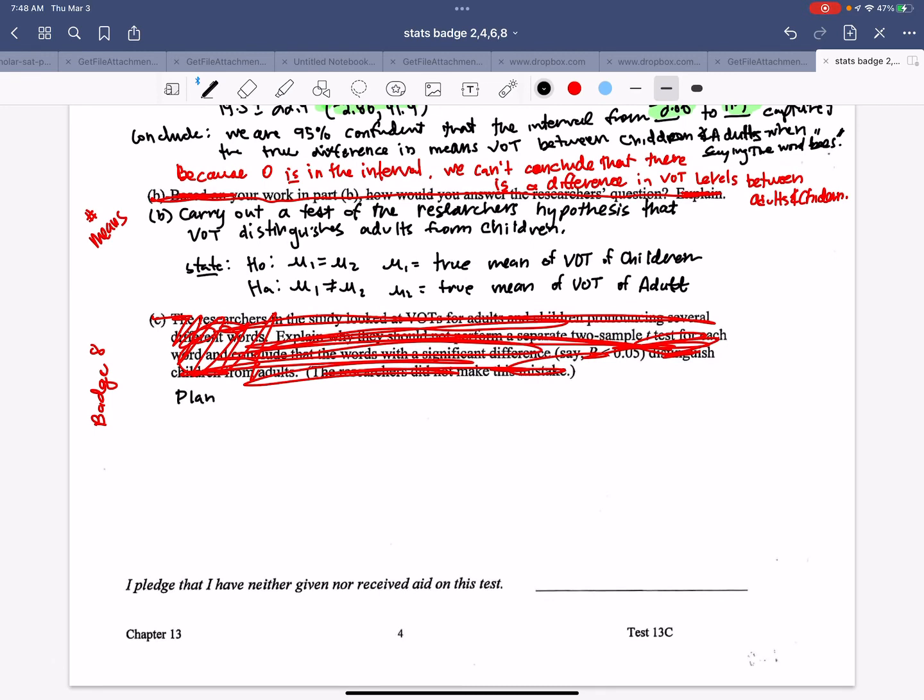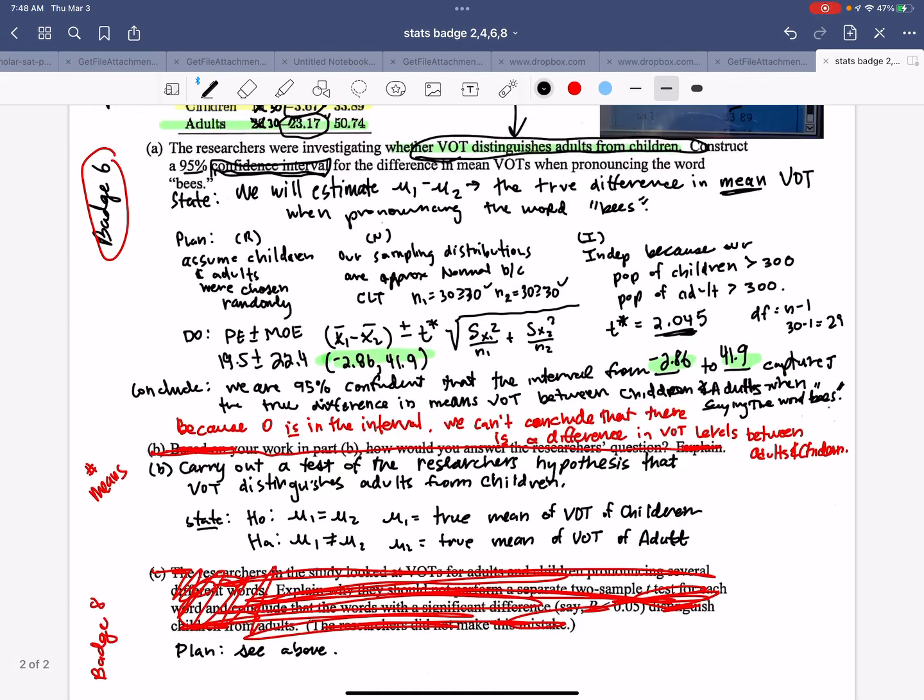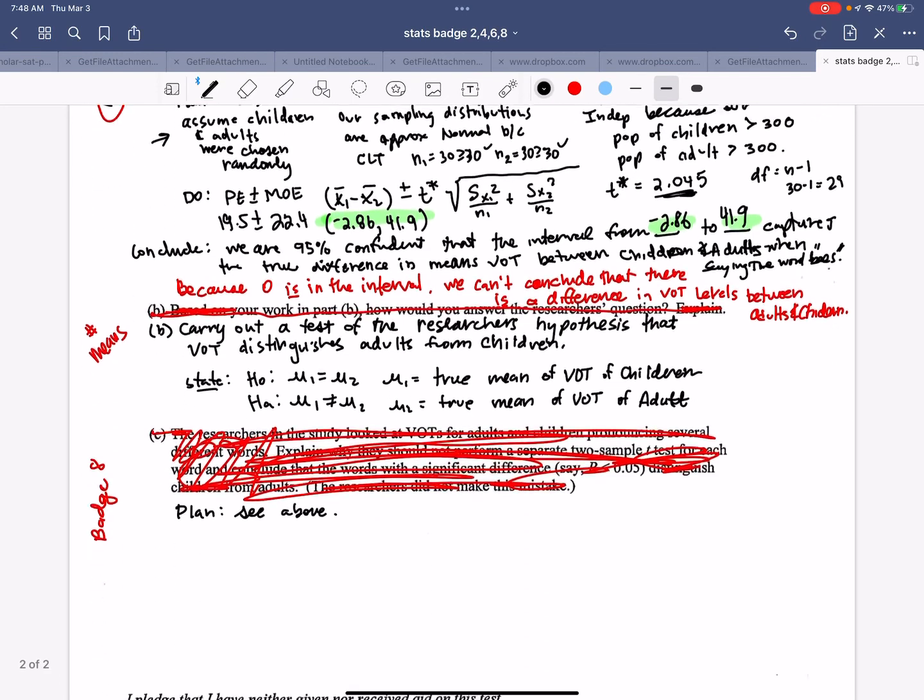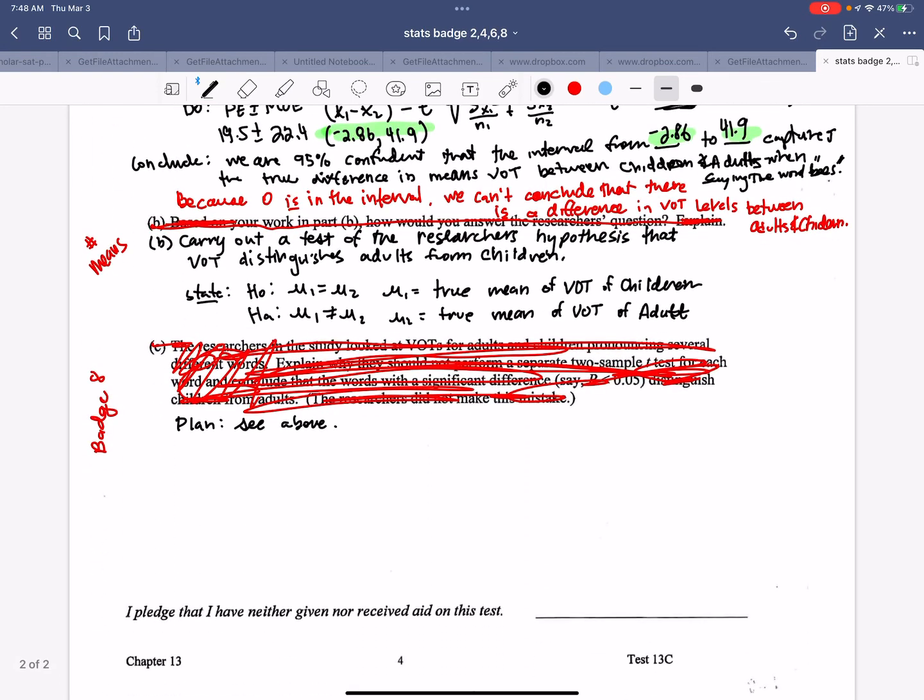So what's nice here is if today, in class, you end up doing badge 6 and 8 at the same time, you can say see above. Right? You don't have to write out your plan because you already did above. That makes it nice.